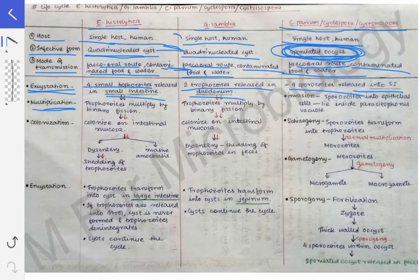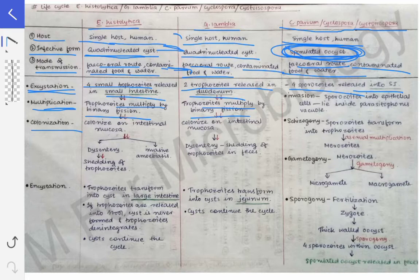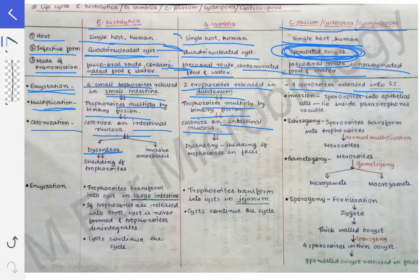Next comes the multiplication part. Once the trophozoites have been released into the intestine, they multiply to increase their numbers in the lumen. The trophozoites multiply by binary fission. After multiplication, they colonize on the intestinal mucosa.